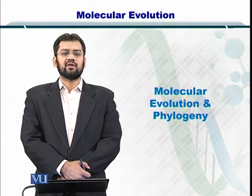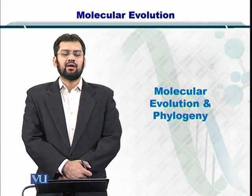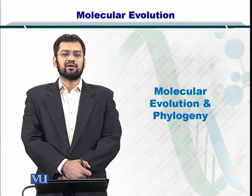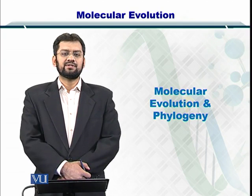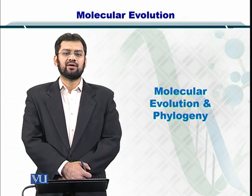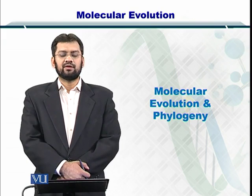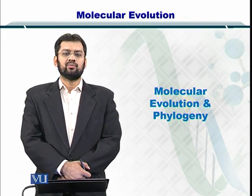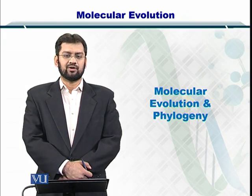Dear students, now we will be starting the chapter of Molecular Evolution and Phylogeny. Towards understanding the molecular relationships and evolution, we need to know how species have evolved over time and what kind of variations have occurred during this process. This chapter is going to help you build a basic fundamental understanding of the algorithms that can be employed to develop the phylogeny.